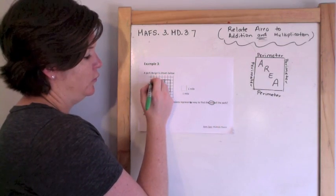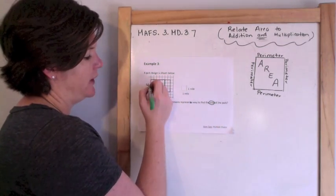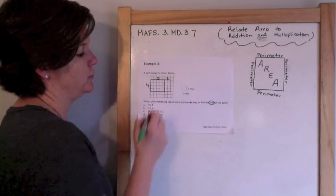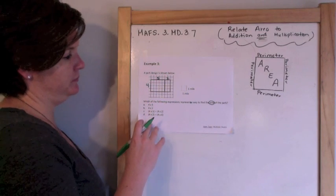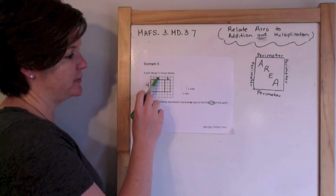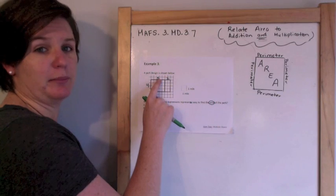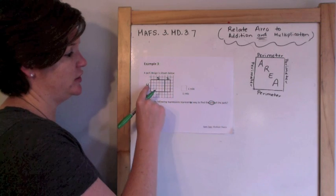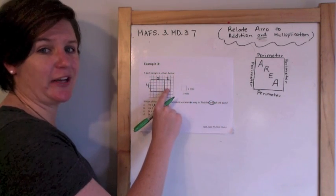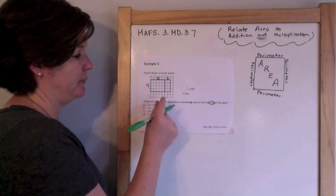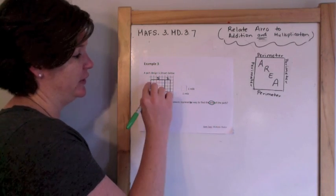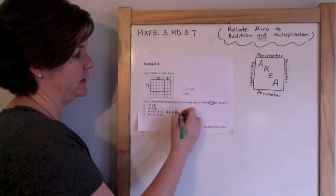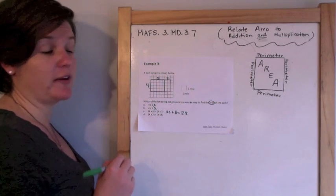Let me figure out the dimensions. I've got 4 miles across and 5 miles here. It wouldn't just be 4 times 5, even though that's the length and width, because I'm not including the extra 2 over here. And it wouldn't just be 4 times 2, because that's only the small area. But if I add them together — 4 times 5, which is 20, plus 4 times 2, which is 8 — that gives me 28, which would be a correct way to find the area.